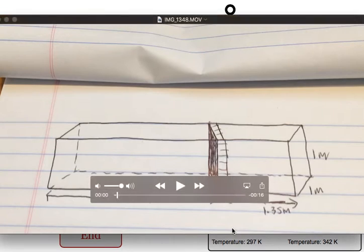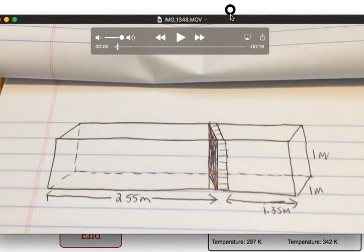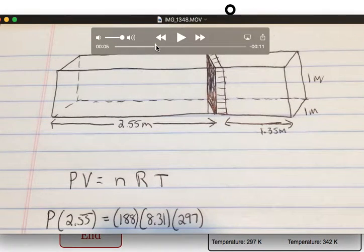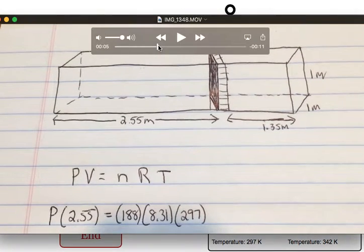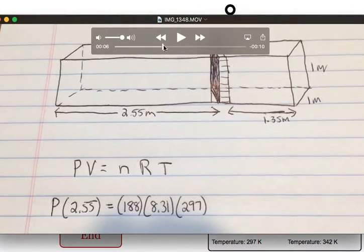Okay, so what we do, we draw out our system, and then you'd like to start out with PV equals NRT. Plug in the volume of the left-hand side, the number of moles on the left-hand side, and the temperature on the left-hand side.